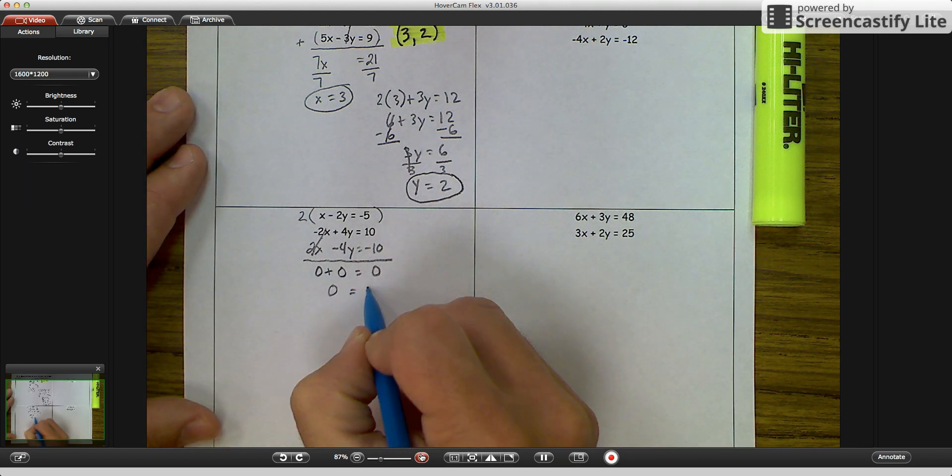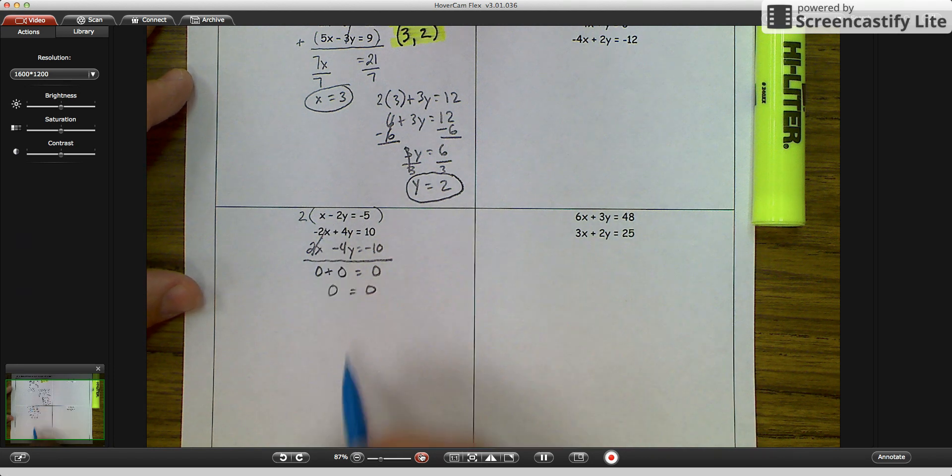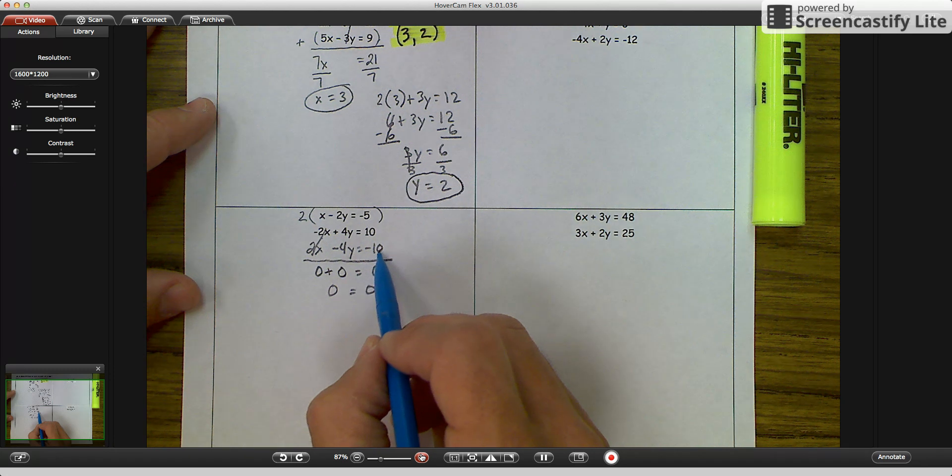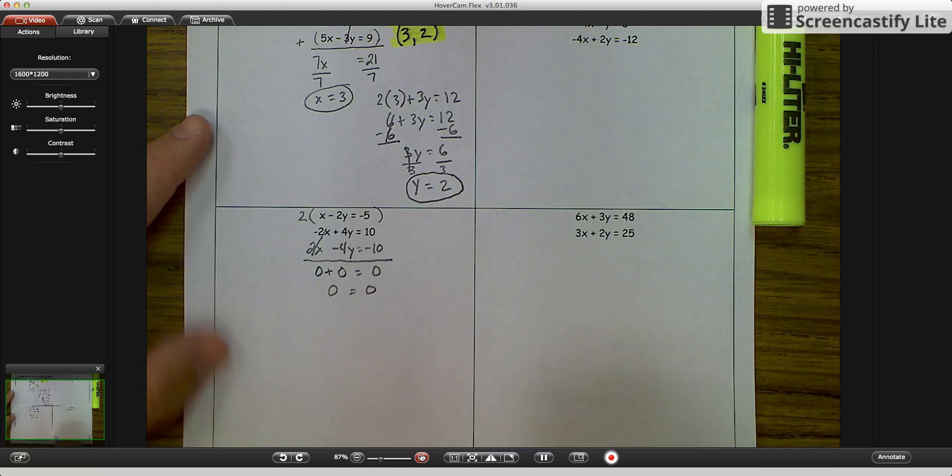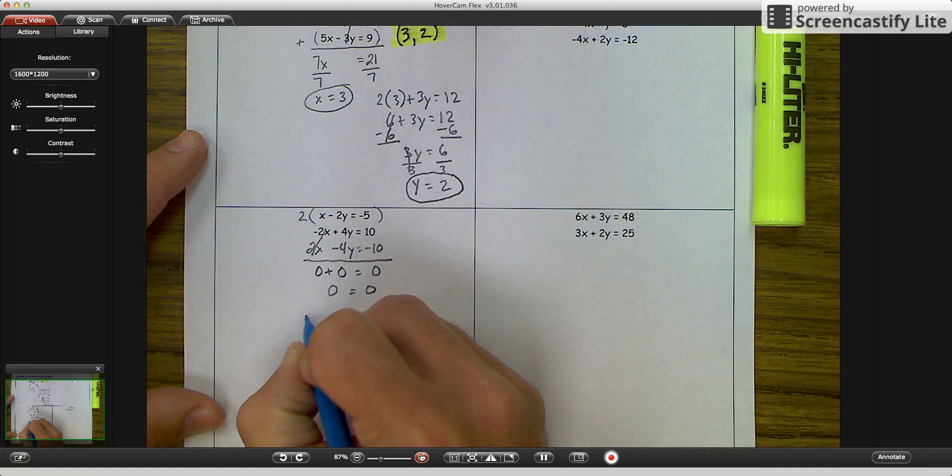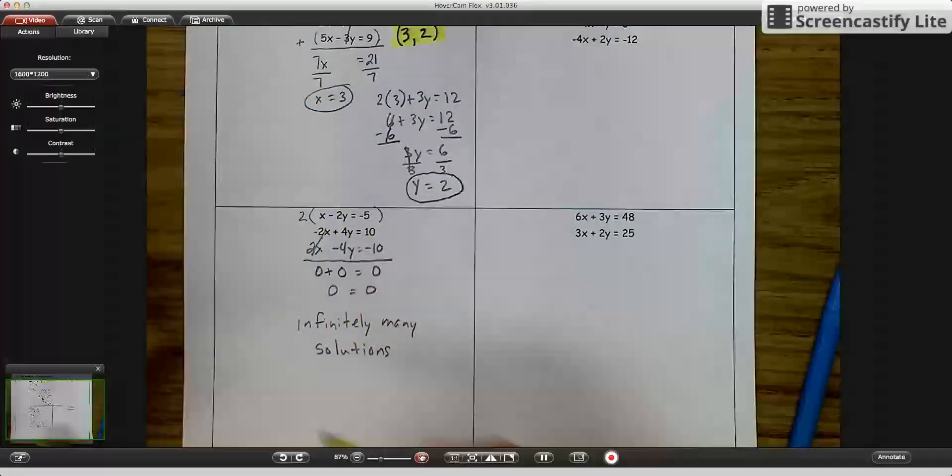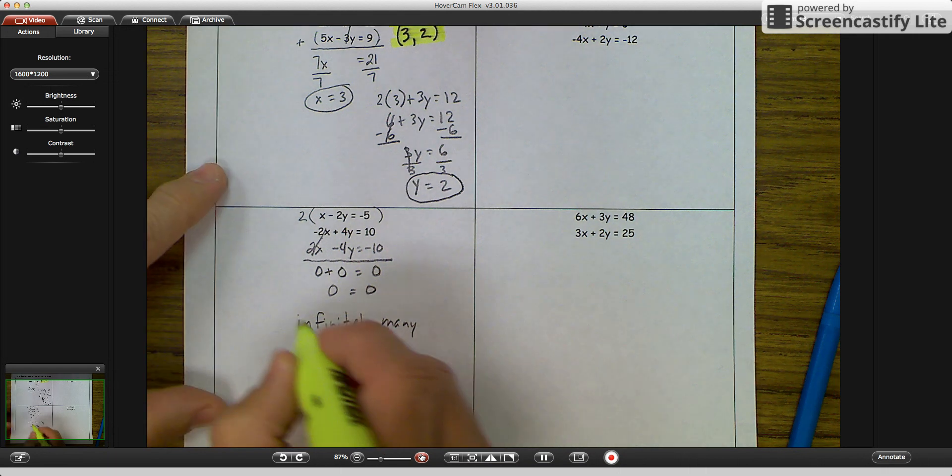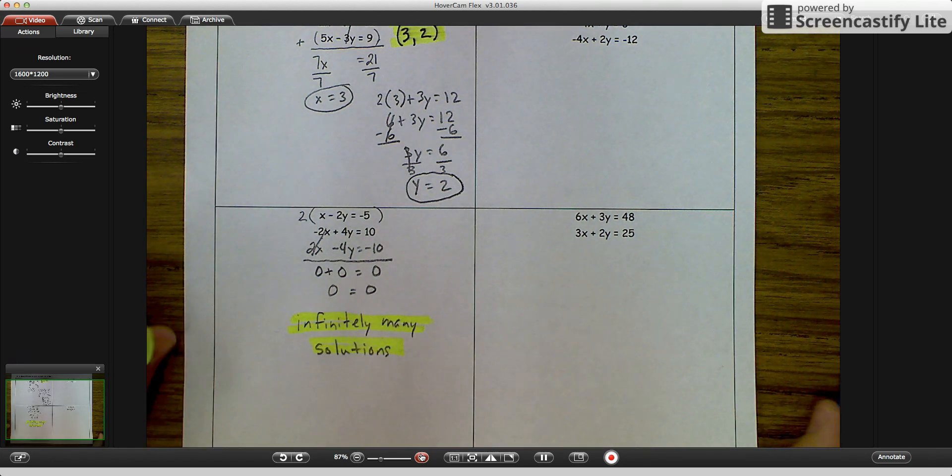Now, if you have something that works out like this, it does happen. When you have the x values eliminate themselves, the y values eliminate themselves, and the coefficient at the end eliminate itself, then you have got an equation that is infinitely many solutions. Okay? And that would be your answer. So as you are doing this, if you get one where the left side eliminates the right side, you get infinitely many solutions.